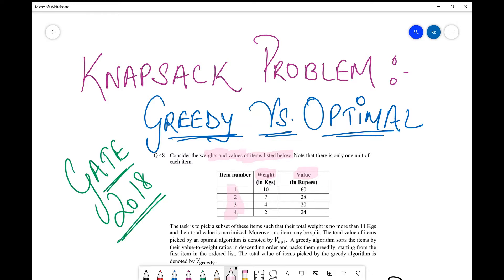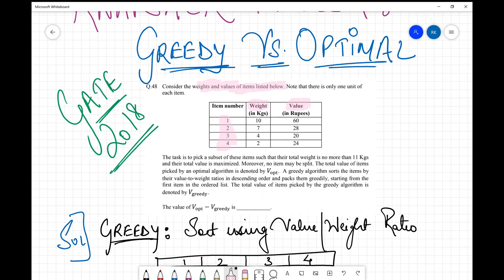And they say that note that there is only one unit of each item. Then they say the task is to pick a subset of these items such that their total weight is no more than 11 kgs. So there is a constraint over here that total weight is no more than 11 kgs.